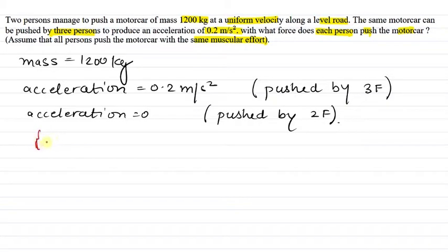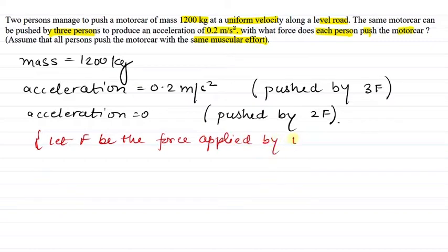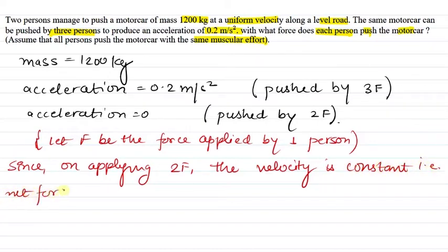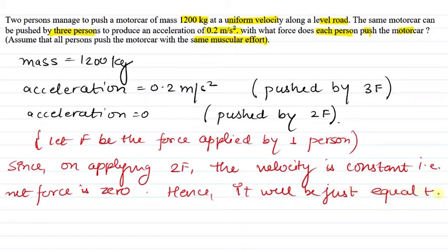Let f be the force applied by one person. Now, since on applying 2f the velocity is constant, that means net force is 0 — because acceleration is 0, net force is 0. This means the 2f applied equals the friction force between the car and the surface.